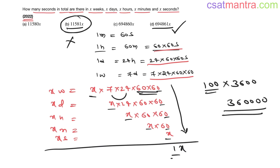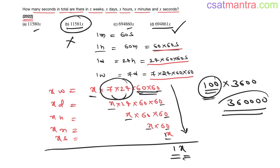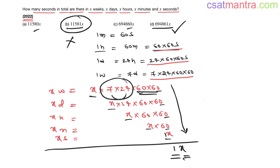The last digit should be one — it cannot be zero. Zero plus zero plus zero plus zero plus zero plus one gives last digit one. x is common. Also, 7 into 24 is more than 140; even if you take 100 you get 360,000, but 11,000 is the option — so that cannot be our answer.